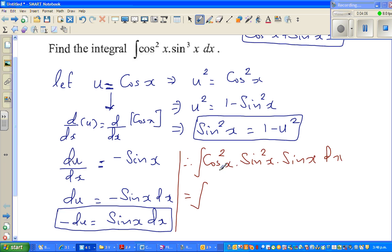So this is same as, what is cos squared x? Cos squared x is u squared. Times, what is sine squared x? Sine squared x is 1 minus u squared, times what is sine x dx? Sine x dx is minus du. So the whole thing has changed into u.